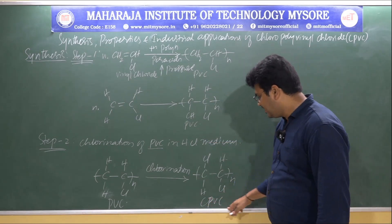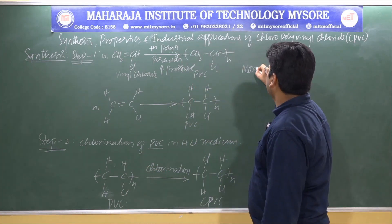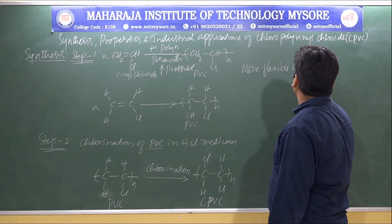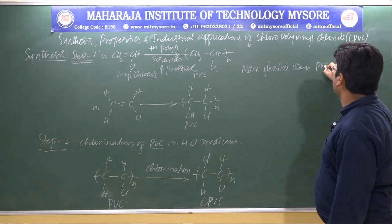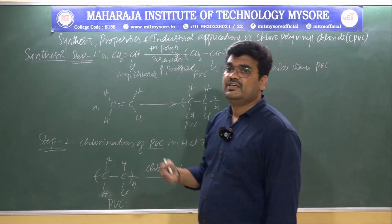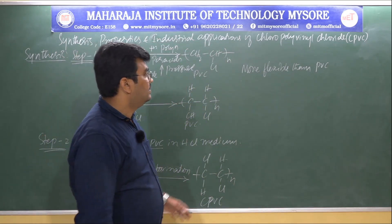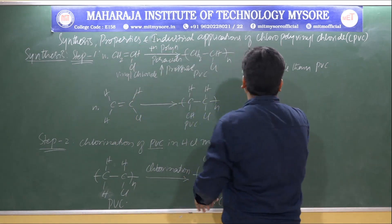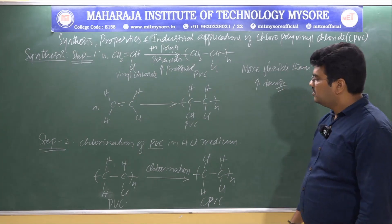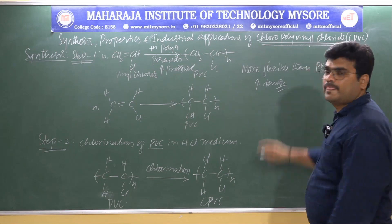Chloropolyvinyl chloride is more flexible than PVC and can withstand very high temperatures because increasing the chlorine content significantly increases its glass transition temperature.